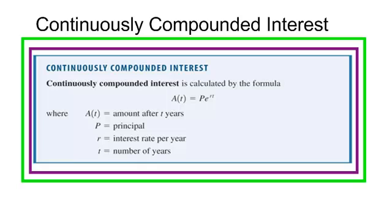You notice we do not have an N in this formula, like how many times per year are you going to compound it, because we are going to compound it continuously. Some people call this PERT because they see the Pe^(rt). Let's work a problem using continuously compounded interest.